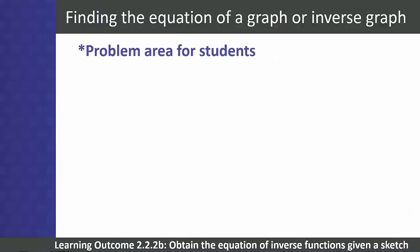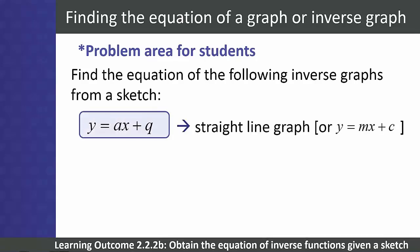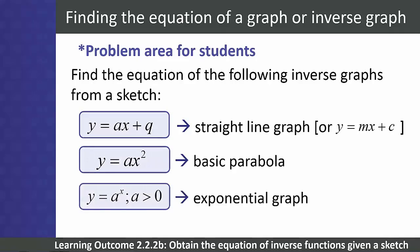Finding the equation of a graph is a real problem area for students. We are going to look at the basic steps for finding the equation of a graph for the three functions at level 4: y equals ax plus q (straight line, or y equals mx plus c), y equals ax squared (basic parabola), and y equals a to the power of x, where a is greater than zero (exponential graph).